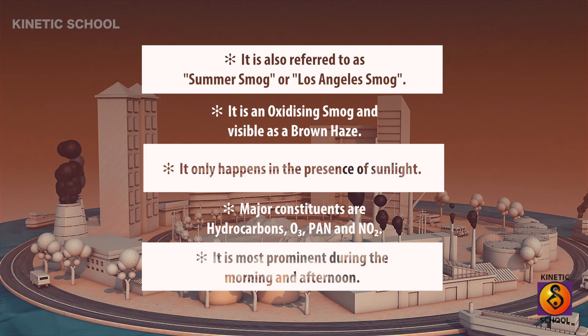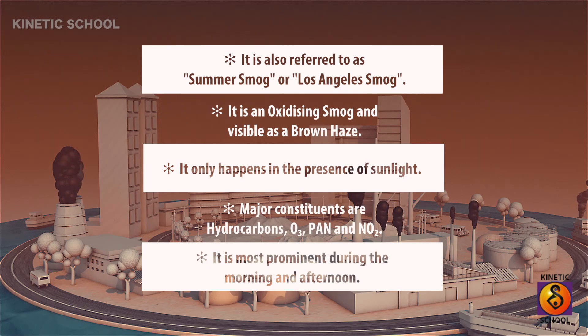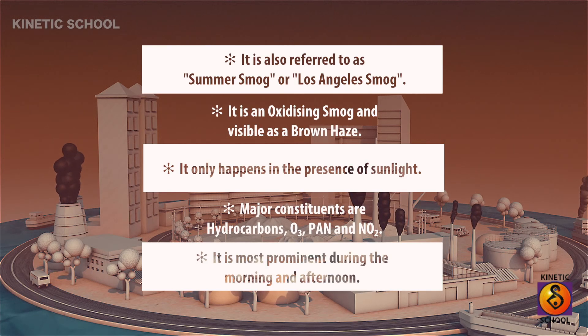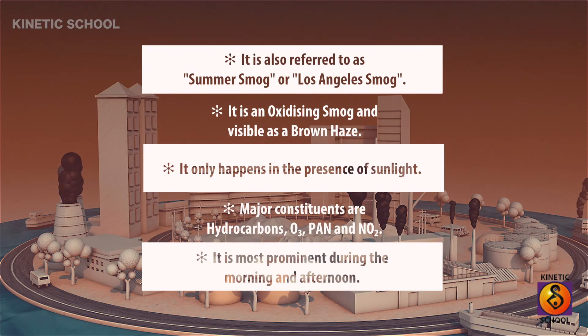Photochemical smog only happens in the presence of sunlight. Major constituents are hydrocarbons, ozone, PAN, and nitrogen dioxides. It is most prominent during the morning and afternoon.